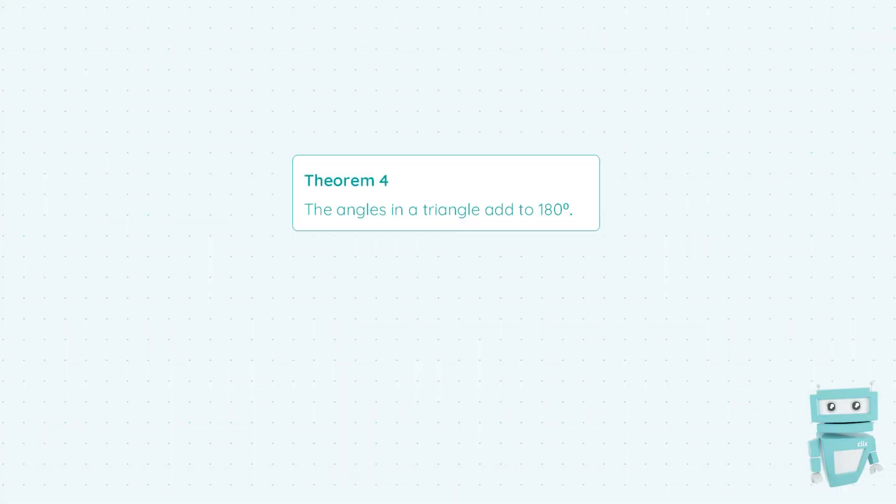Hi guys, Sean here from StudyTlex. In this video we're going to be taking a look at Theorem 4, which states that the angles in a triangle add to 180 degrees.